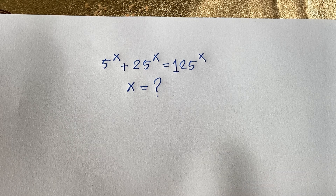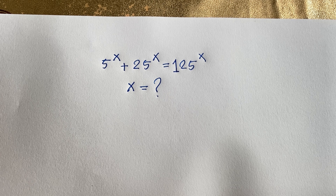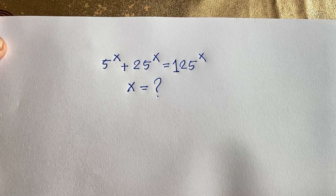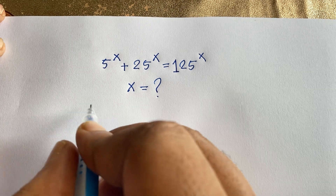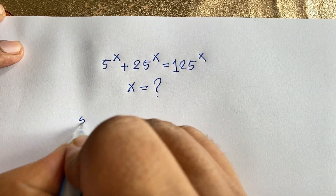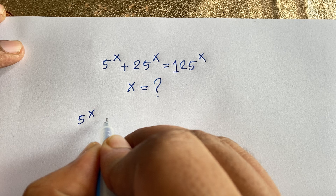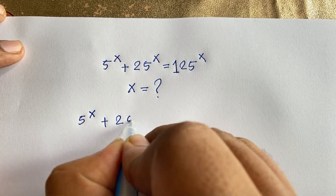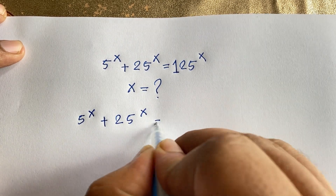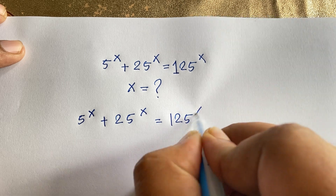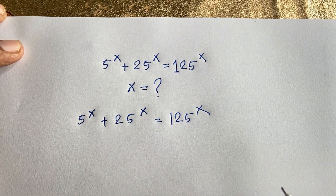Hello everyone. In this video we have solved this interesting exponential equation. The question is: 5 to the power x plus 25 to the power x is equal to 125 to the power x. We need to find x. So how do we solve this exponential expression?